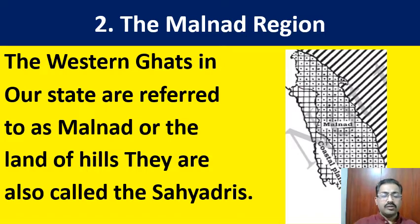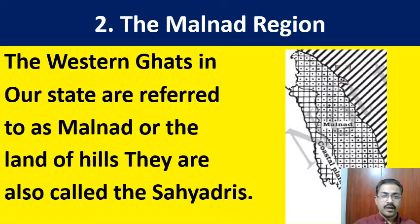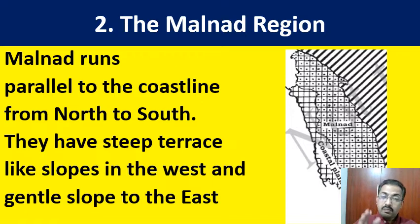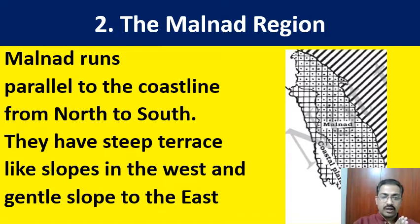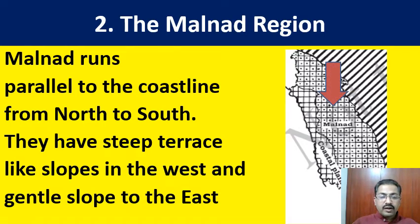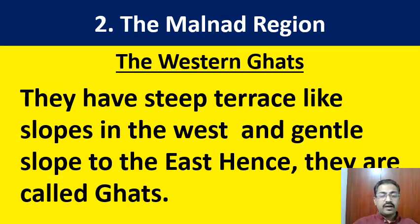The Malnad region runs parallel to the coastal plain of Karnataka, right from north to south. They have steep terrace-like slopes in the west and gentle slopes to the east. This Western Ghats range is almost about 650 kilometers in length and 50 to 76 kilometers in width. The height of these mountain ranges in Malnad ranges from 900 to 1500 meters from sea level. These mountain ranges obstruct the rain-bearing winds, particularly the southwest monsoon winds blowing from the Arabian Sea and the Indian Ocean, causing heavy rainfall.